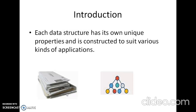Each data structure has its own unique properties and it is constructed to suit various kinds of applications. Some of them are highly specialized to carry out specific tasks. For example, stack, a linear data structure which provides last-in-first-out access, is used to store and track the sequence of web pages while we browse the internet. Similarly, B-trees with their unique ability to organize indexes are well-suited for the implementations of databases. Specific data structures are essential components of many efficient algorithms and make possible the management of large amounts of data such as large databases and internet indexing services.